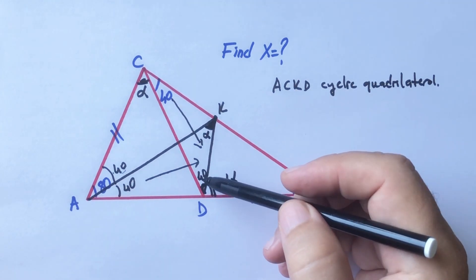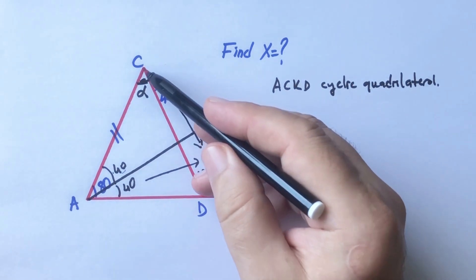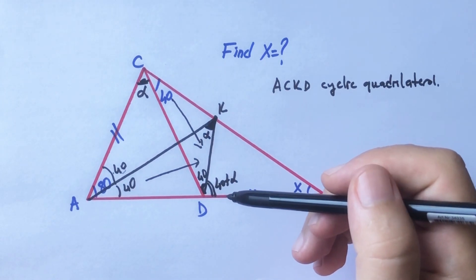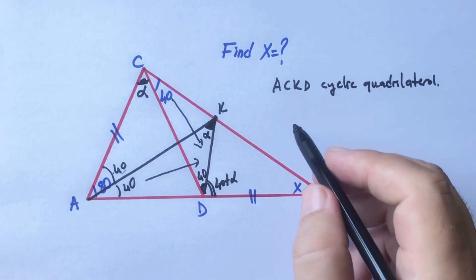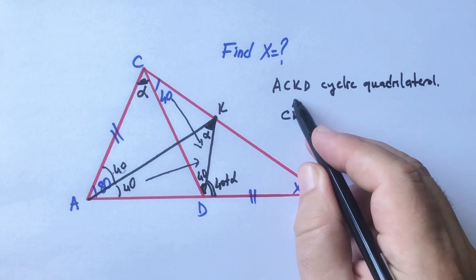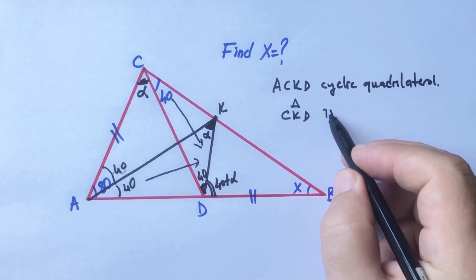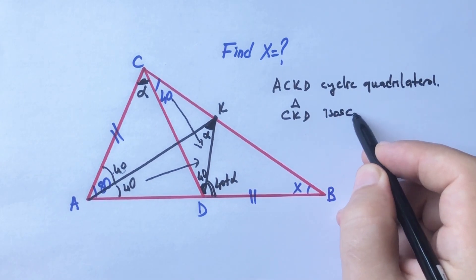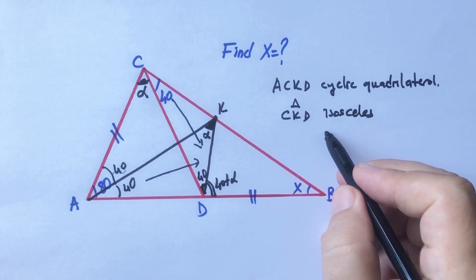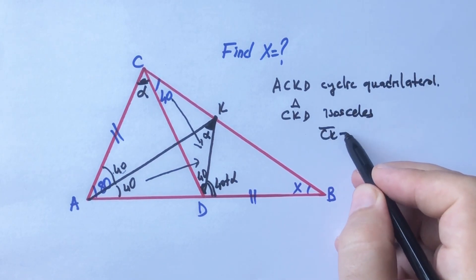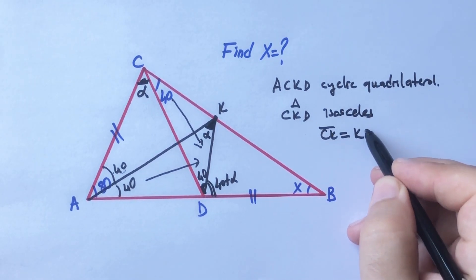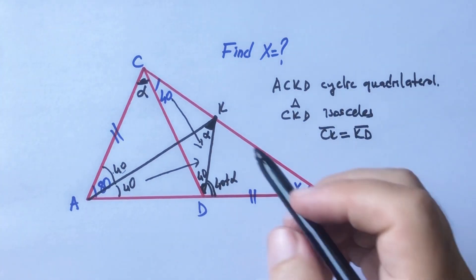We know that two interior angles equal one exterior angle, so here we have 40 plus alpha. If you focus on triangle CKD, triangle CKD is an isosceles triangle, therefore CK must equal KD.